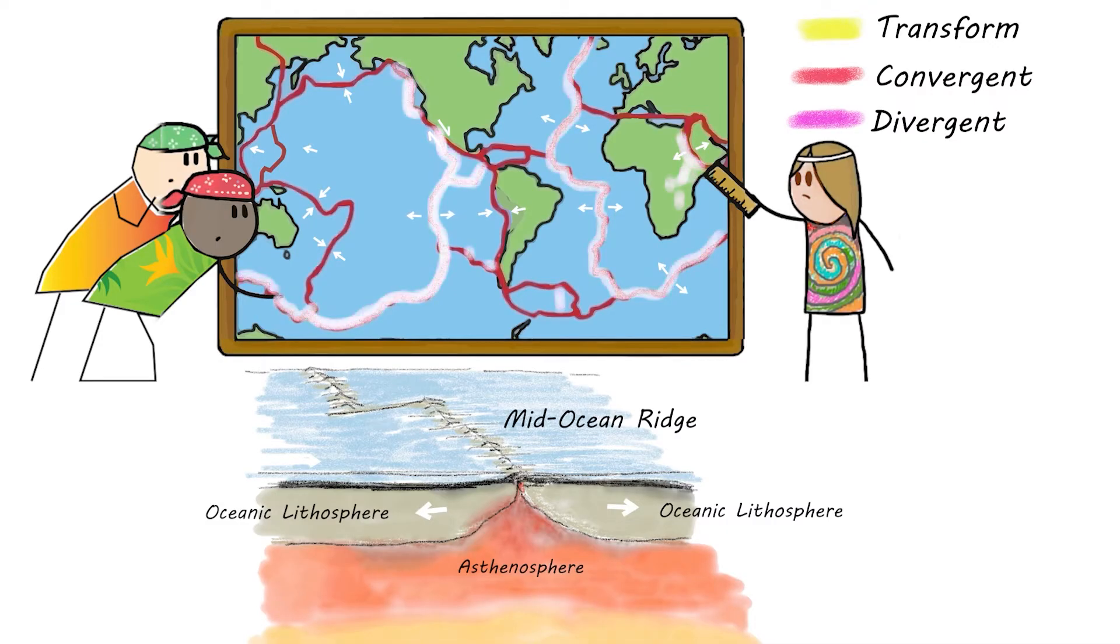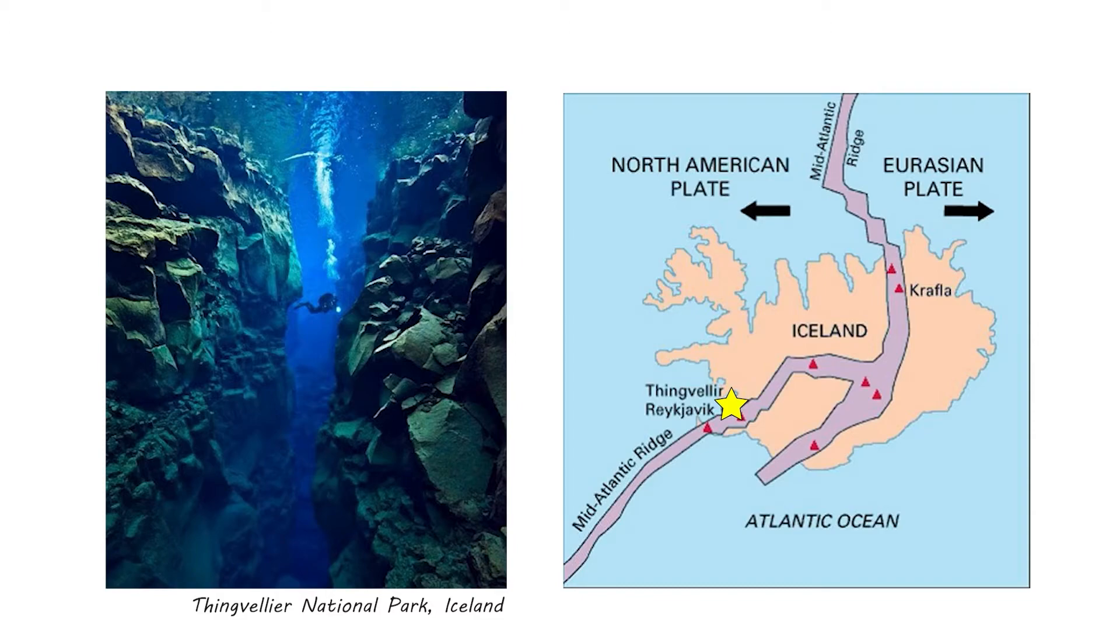Divergent plate boundaries occur where two plates move apart from each other, such as where ocean spreading ridges are. A good example is the Mid-Atlantic Ridge.